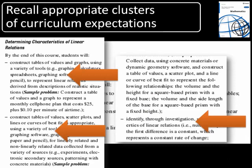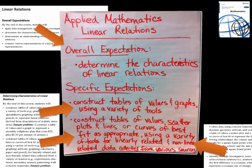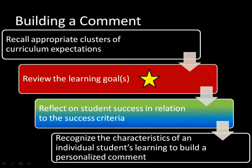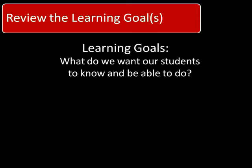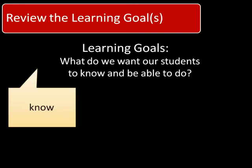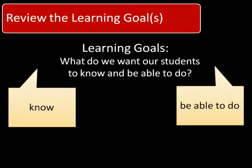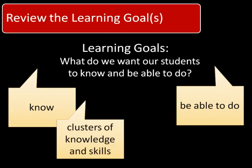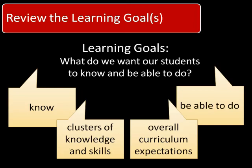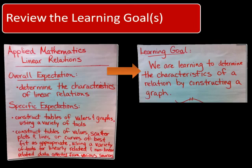The learning goal is based on a cluster of specific expectations that are related back to the overall expectation. We continue the process of building a comment by reviewing the learning goal that was developed based on our cluster of expectations. Learning goals are brief statements that describe for students what they should know and be able to do by the end of a period of instruction. The learning goal represents subsets or clusters of knowledge and skills that the student must master to successfully achieve the overall curriculum expectations. Here, we begin to develop a learning goal from the overall expectation, incorporating key learning from the specific expectations.